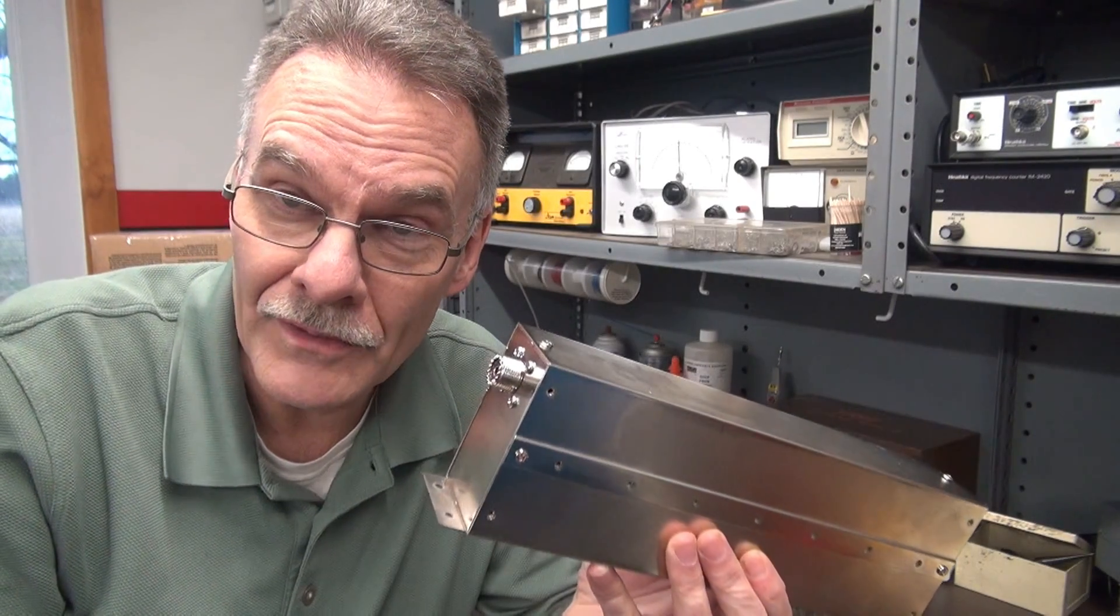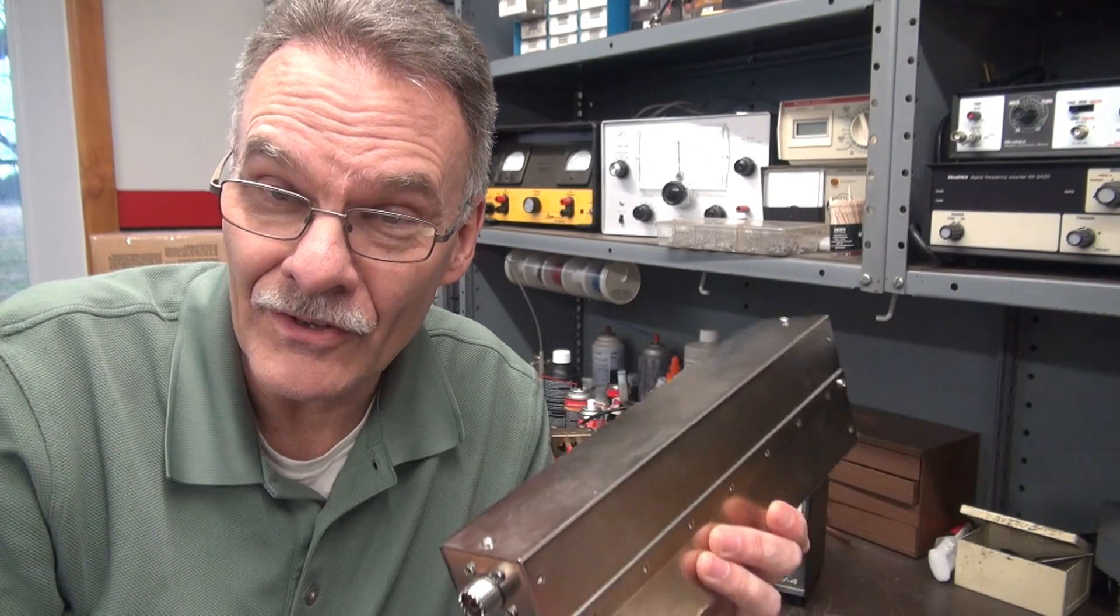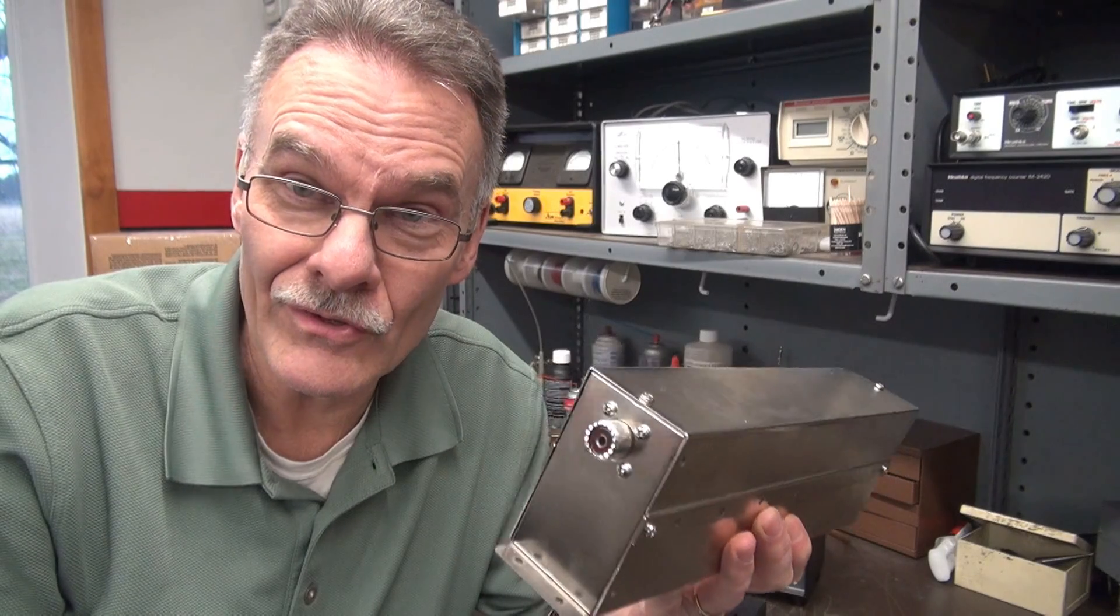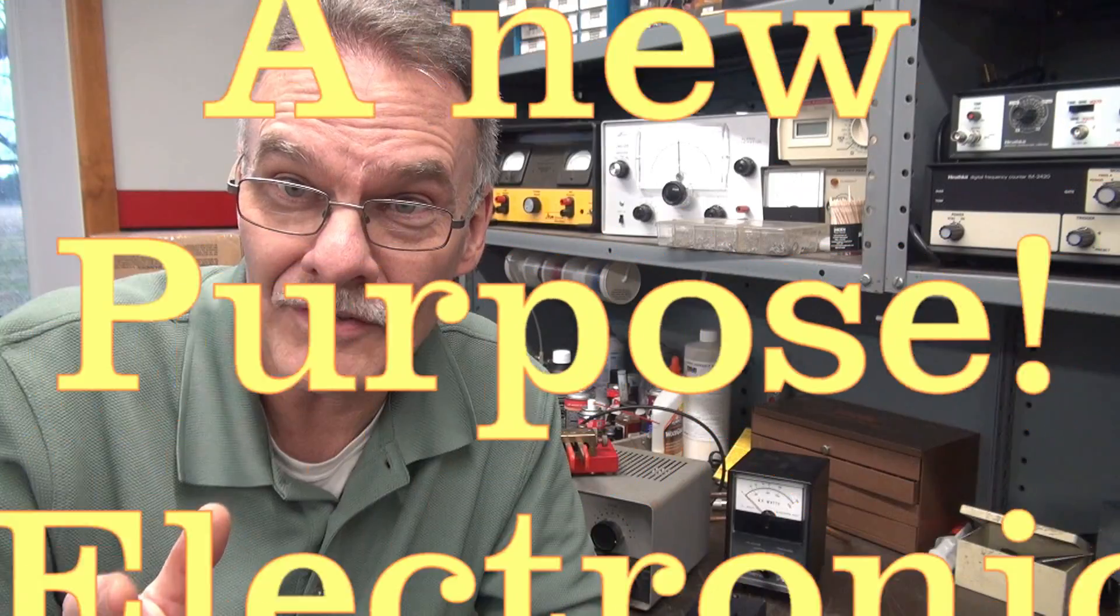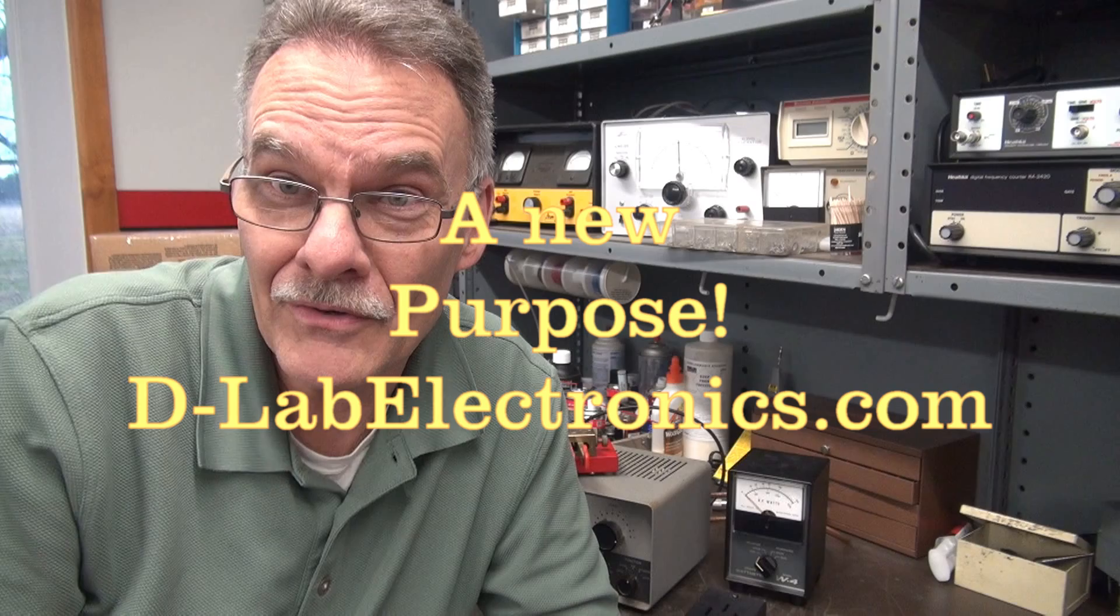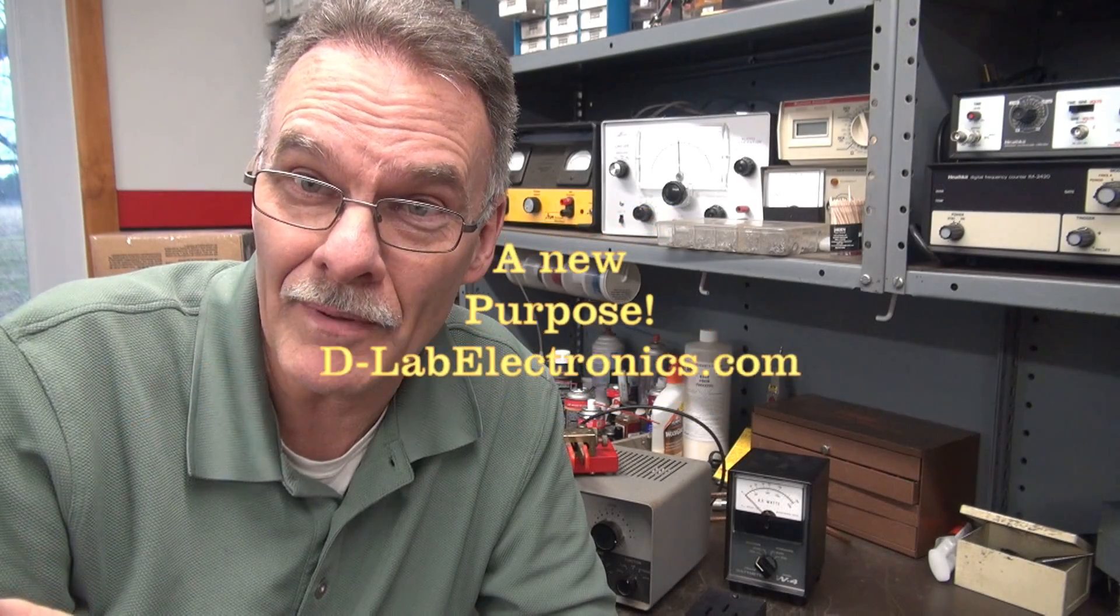Well, so there you have it, a very cost effective way of building a dummy load out of a worthless low-pass filter. You can find these things out there on the used market for about 10 bucks. I think I also paid about 10 bucks for those resistors. So what a great way to save yourself about $200 on a dummy load and you get to build it yourself. That's what ham radio is all about. Hope you enjoyed the tech tip, we'll see you again.